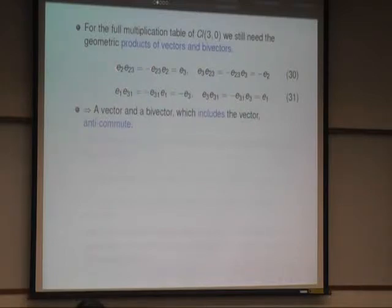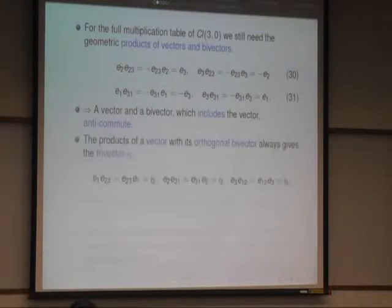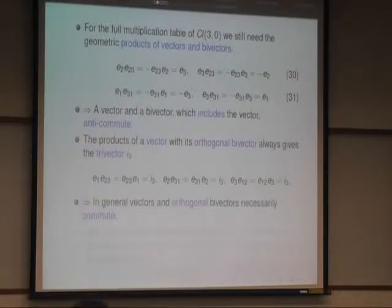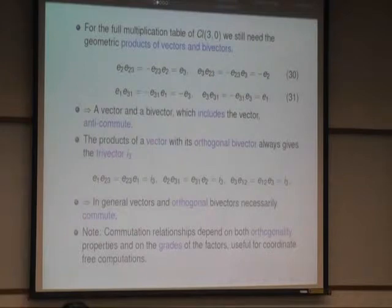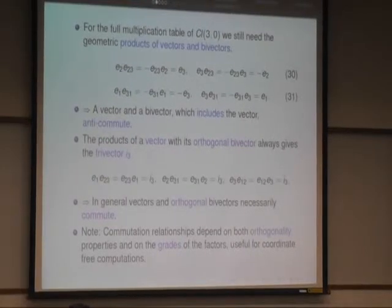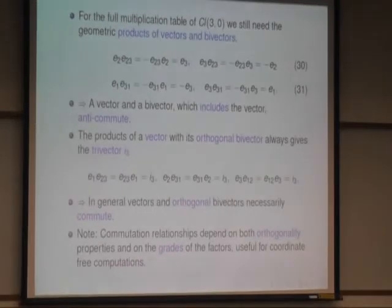Always it's chosen here that the vector is included in the bivector. Now if the vector is not included in the bivector, then you get always I3 here, and then you have commutation. So in general, vectors and orthogonal bivectors necessarily commute. Commutation relationships depend on orthogonality and on the grades of factors in such products. But that's very good because you just know about orthogonality and grades, and you can already make computations even without introducing coordinates.